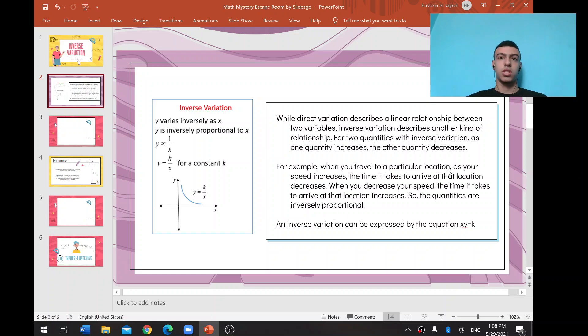For example, when you're traveling to a location, as your speed increases—and we know that speed equals distance over time—you can notice that distance has direct variation to speed, and time has inverse variation with speed. When speed increases, the time to arrive decreases. When you decrease the speed, the time to arrive increases. These quantities, speed and time, are in inverse variation.